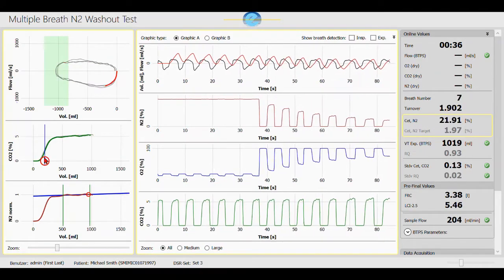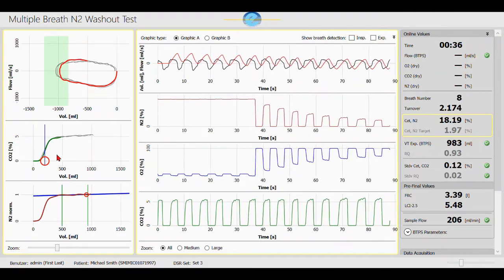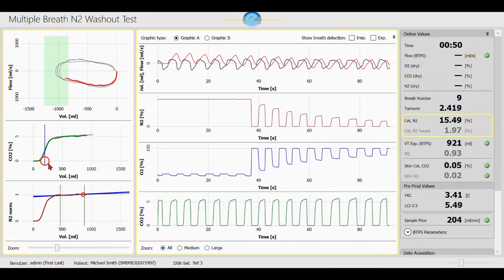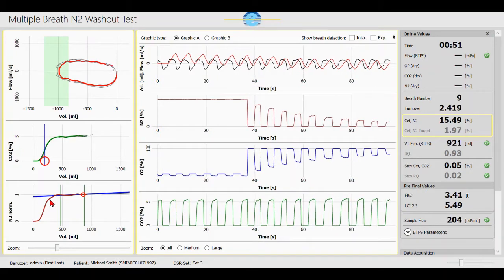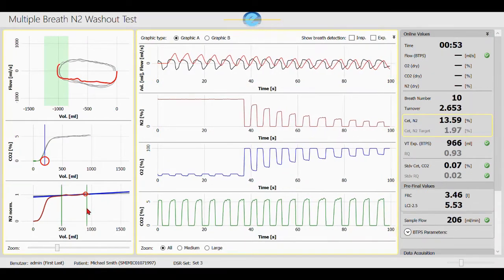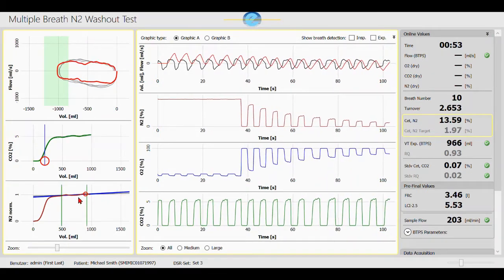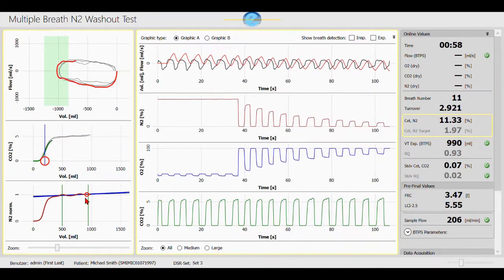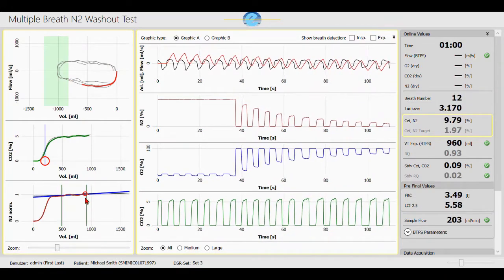Below, we have the volume capnogram, where the physiological dead space is marked with a red circle. On the bottom, you see the nitrogen expirogram, where the phase 3 slope can indicate a possible ventilatory disturbance in the small airways.